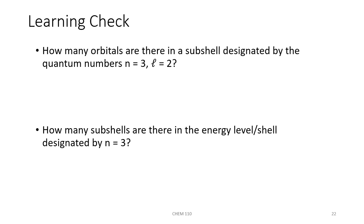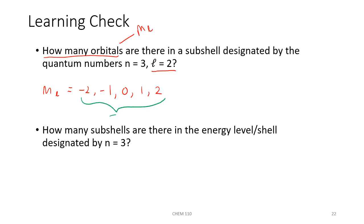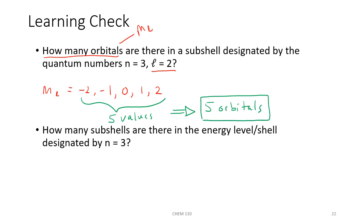How many orbitals are there in a subshell designated by n equals 3 and l equals 2? If l equals 2, the possible m_l values range from −2 to +2: that is −2, −1, 0, +1, and +2 — five values. Those five values correspond to five orbitals. In this case, those five orbitals would be the 3d orbitals.